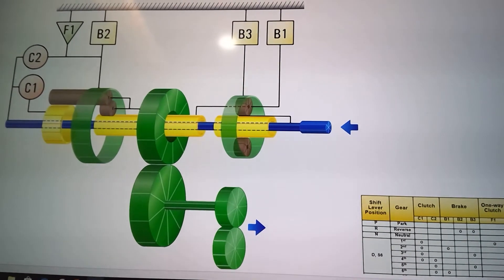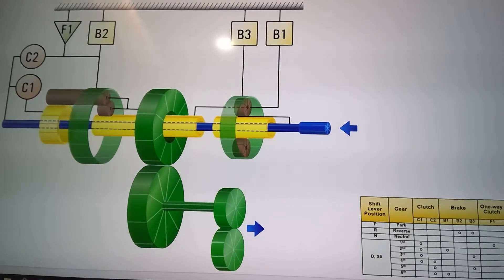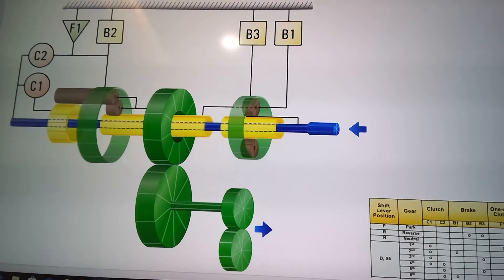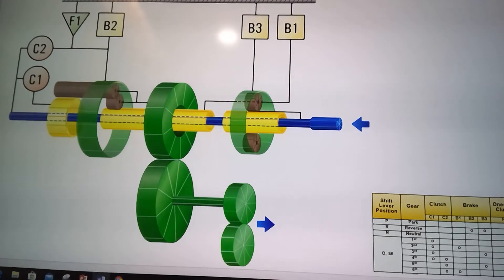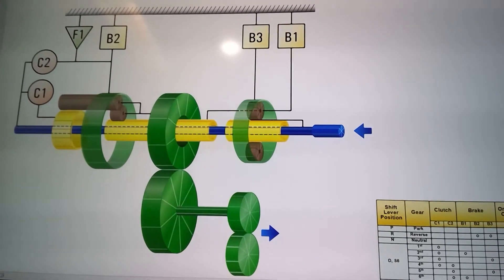You have a Ravigneaux on the left and a regular planetary gear set on the right. The output is actually in the middle. Those two big green gears in the middle output and has some other gearing too before it gets to the final drive.